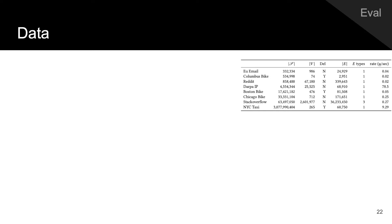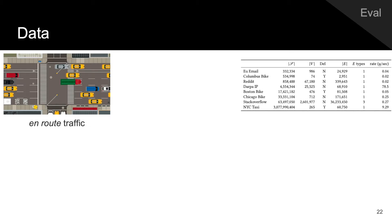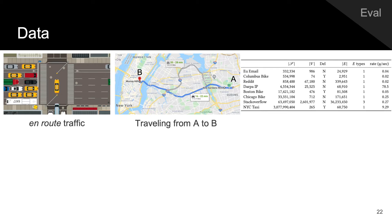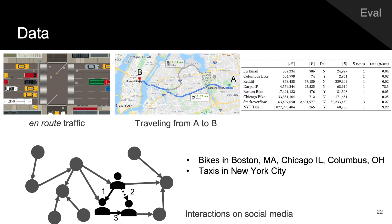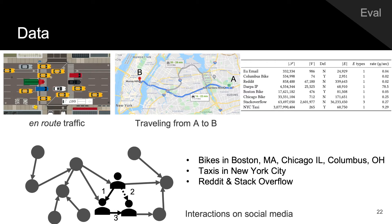The real-world networks we analyze include traffic networks, which encode in-route traffic, traveling from some point A to some other point B in a road network. Specifically, we use bike networks in Boston, Massachusetts, Chicago, Illinois, and Columbus, Ohio, as well as a taxi network in New York City. We also analyze social networks, which capture interactions on social media, specifically Reddit and Stack Overflow.